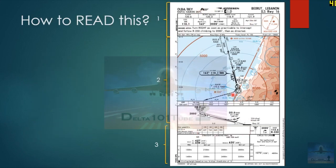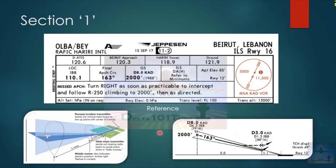We'll divide this entire chart into three sections: the top portion denoting number one, this section denoting two, and this section denoting three. In section one, you can see on the top left this is the ICAO of the airport, which is OLBA, Rafik Hariri International Airport. On the right it's written Beirut, Lebanon area, and the chart is for ILS runway 16. These are the frequencies: ATIS 120.6, Beirut Approach 120.3, Hariri Tower 118.9, and Ground 121.9.